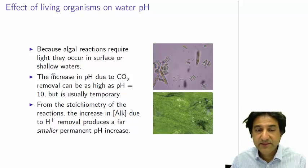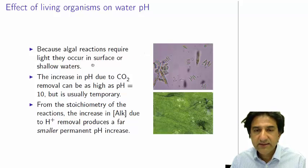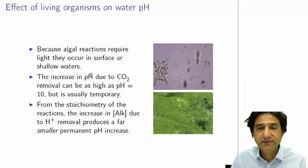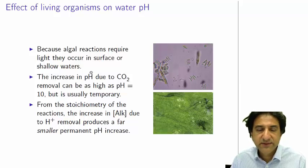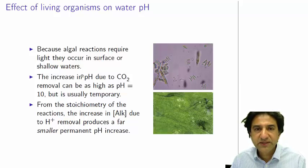And where exactly? Algal reactions require sunlight. Photosynthesis requires sunlight. So by definition, those reactions occur at the surface. When you're at the bottom, there's not as much light, so there's less photosynthesis. What happens when you get photosynthesis?